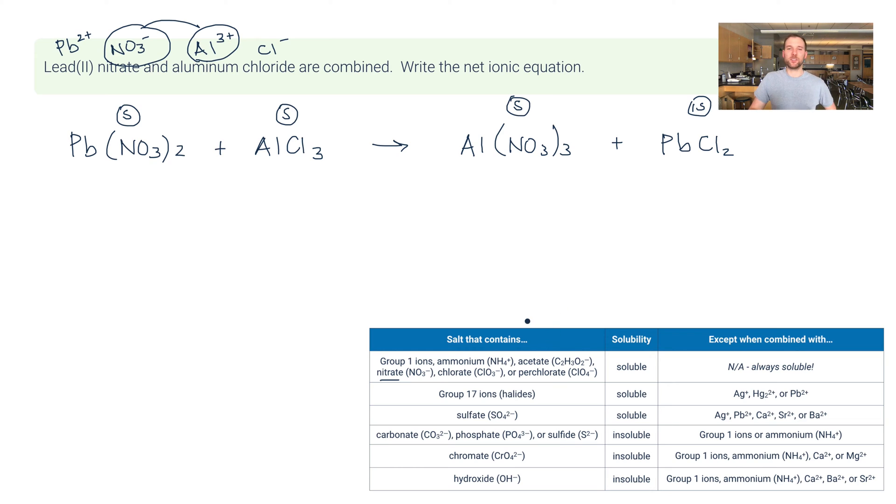Now the next step here is actually to make sure that this equation is balanced. And I see that I have two nitrates on the left but three on the right. So I want to make these both six. So I do that by putting a three here. Three times two is six. A two here. Two times three is six. And then I just have to fix my leads. There's three leads here. So three. There's two aluminums here. So two. And then finally check the chlorides. Two times three is six. Three times two is six. Okay.